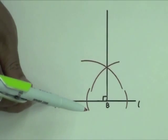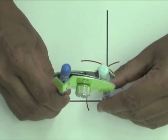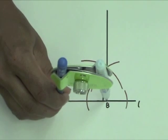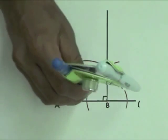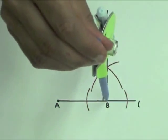Place the compass point on A and adjust the compass width to the length of AB. Without changing the compass width, move the compass point to B and draw an arc that intersects the half line.